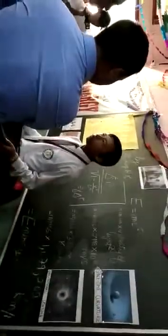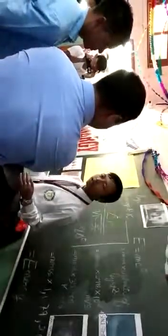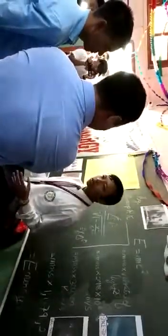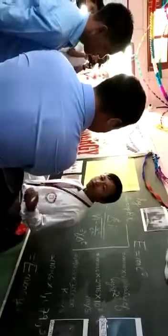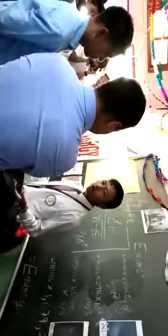Absolute zero mass means having exactly no mass. But nothing in the universe has exactly no mass, because everything in the universe has at least a very small amount of mass.